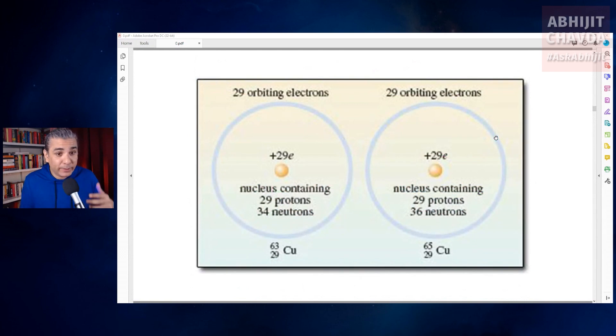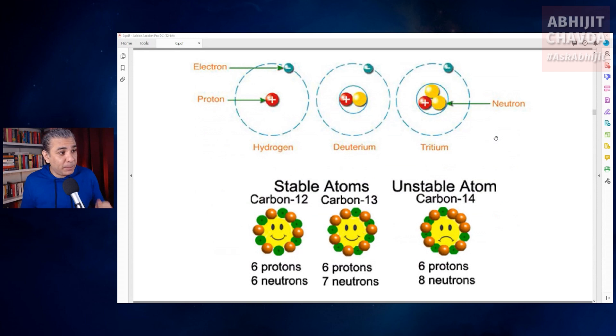Some atoms have extra neutrons. For example, some copper atoms have 34 neutrons, and some copper atoms have 36 neutrons. Atoms with the same number of protons but different number of neutrons are called isotopes.